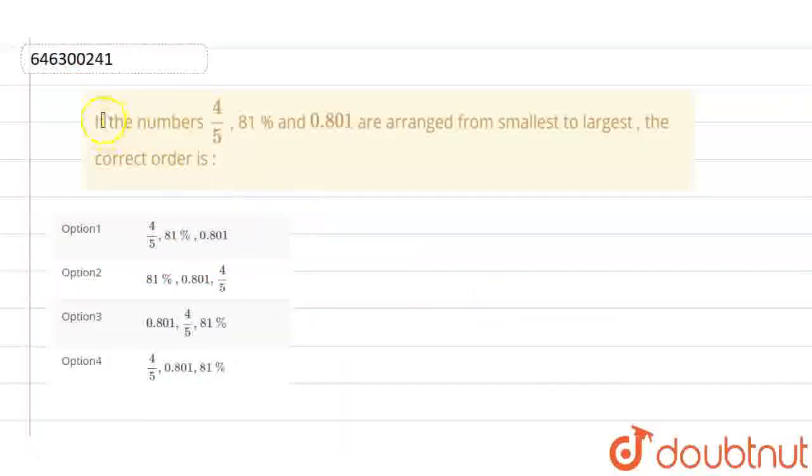The question that was given to us: If the numbers 4/5, 81%, and 0.801 are arranged from smallest to largest, what will be the correct order?